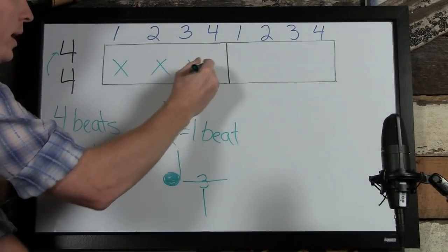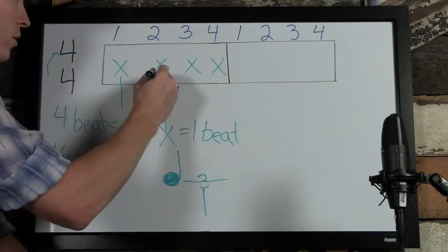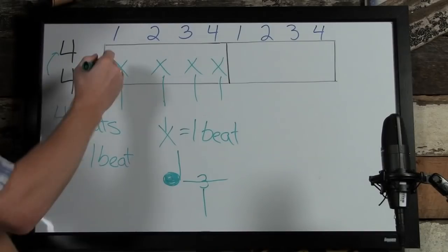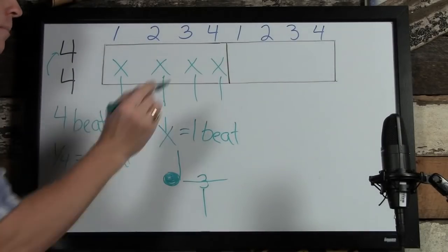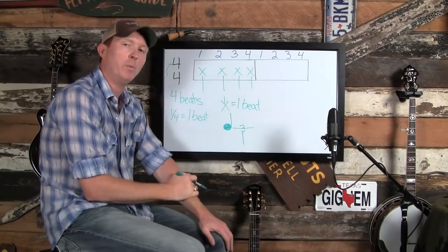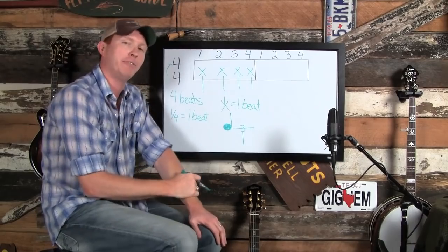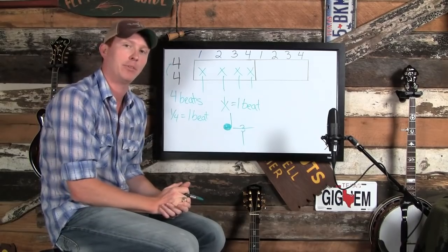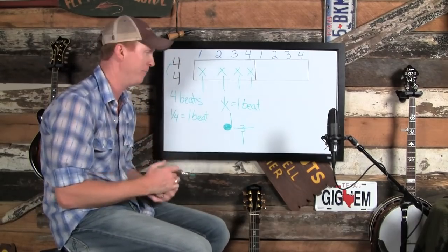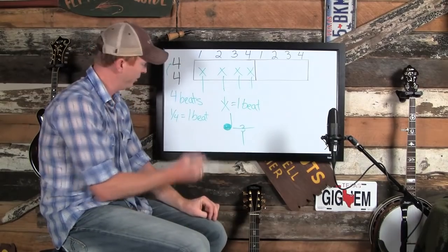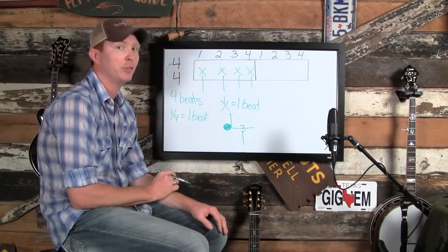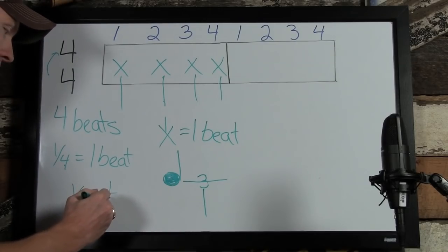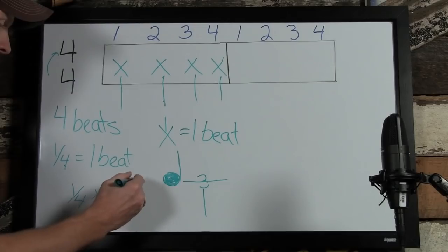So a full measure of quarter notes would look like: one, two, three, four — four X's each with a stem drawn down. That's essentially what we were playing in Parts 1 and 2: bass-strum, bass-strum. Now, each one of these quarter notes can be divided into subunits, and those subunits have names. Music is very mathematical, which is why I love it. A quarter note divided by two — a quarter times a half — gives you one eighth.